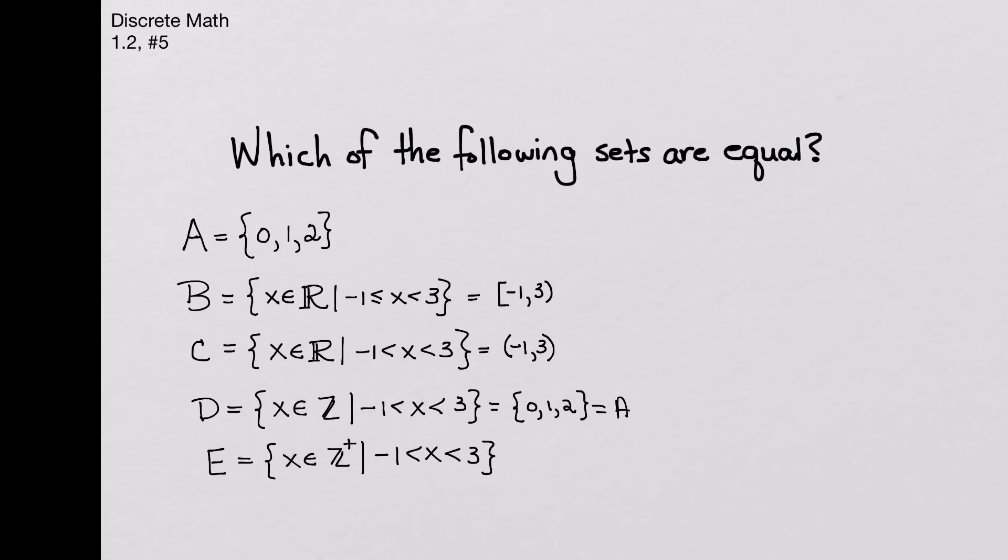At first, it looks like set E is also the same thing, except there's a plus sign up here, which means that X is an element of the positive integers, and keep in mind that 0 is not a positive integer. It's not negative either. It doesn't fall into either category. So we just have 1 and 2, and so that's not equal to any of the other sets.